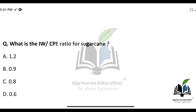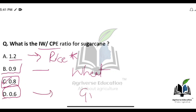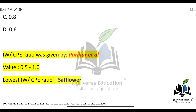What is the IW/CPE ratio for sugarcane? The right answer is 0.8 for sugarcane. Option A — 1.2 — is for rice (highest IW/CPE ratio). 0.9 is for wheat. Option D — 0.6 — is for groundnut (lowest). The IW/CPE ratio concept was given by Parihar et al., and its value varies from 0.5 to 1.0.